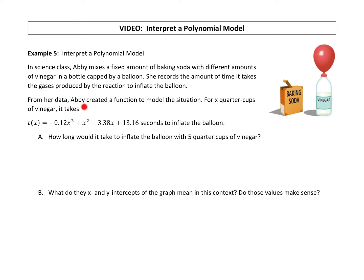So here she's got her mixture. She's putting a balloon on and timing to see how long it takes for that balloon to inflate. From her data, Abby created a function to model the situation. For x quarter cups of vinegar, it takes t(x) = -0.12x^4 + x^2 - 3.38x + 13.16 seconds to inflate the balloon. Part A, how long would it take to inflate the balloon with 5 quarter cups of vinegar?